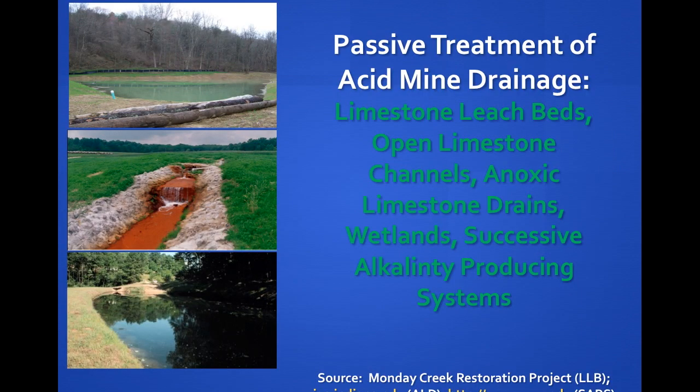Passive treatment of acid mine drainage is effective at reducing acidity and precipitating metals. Acidic mine water flows into ponds lined with limestone. As the water enters the pond, the pH of the water is increased and the metals are precipitated. These can act as single ponds or in concert.